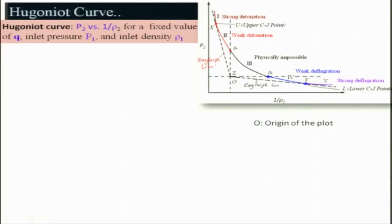The upper region corresponds to very high velocity — this is the detonation regime. The portion from the lower CJ point towards B is the deflagration regime. Keep in mind that the lower branch of the Hugoniot curve is not possible in normal shock waves due to violation of the second law of thermodynamics, as entropy would be decreasing. The five regimes are: Region 1 (strong detonation), Region 2 (weak detonation), Region 3 (physically impossible), Region 4 (weak deflagration), and Region 5 (strong deflagration).